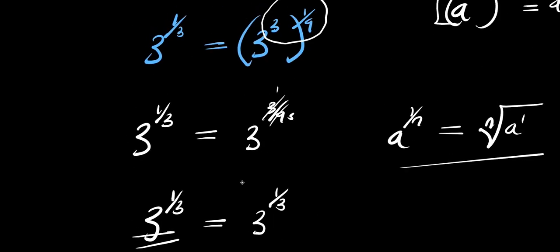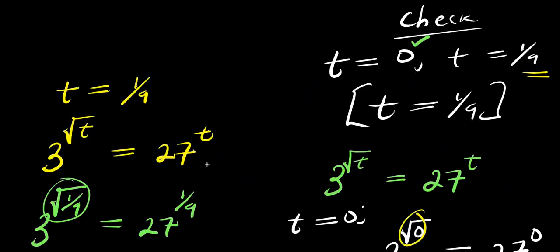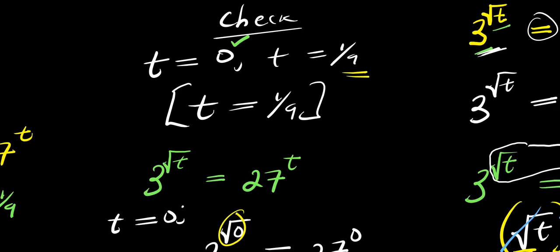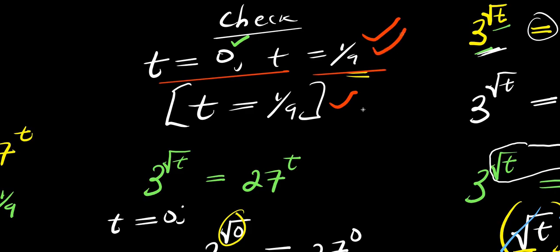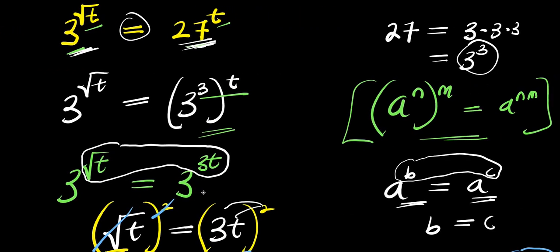So what this tells us is that both 0 and 1 over 9 are correct solutions. The first method gave us both solutions: t equals 0 and t equals 1 over 9. The second method gave us only t equals 1 over 9. That means the first method is a better option if you want to solve this in your exams. Thank you and goodbye.